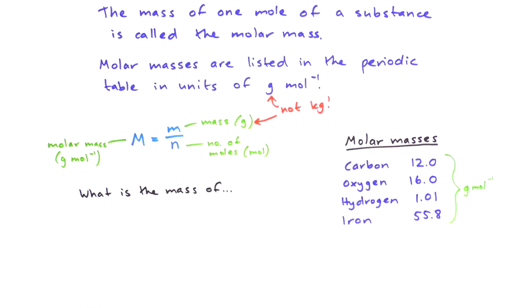What's the mass of five moles of hydrogen atoms? We can rearrange the formula and say that the mass m is equal to M times n. The mass is the molar mass times the number of moles. That makes sense in terms of units: we've got grams equals grams per mole times moles.